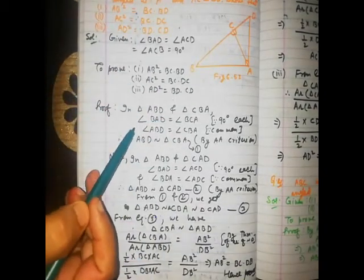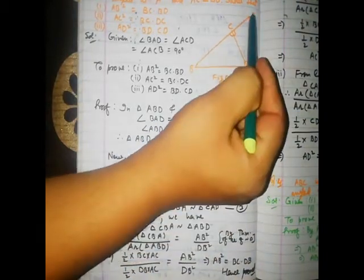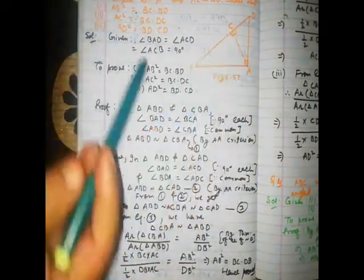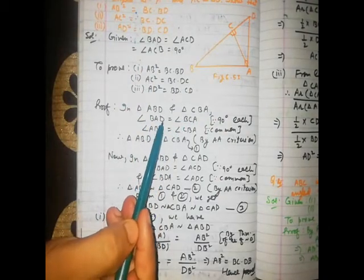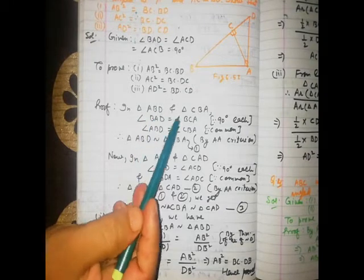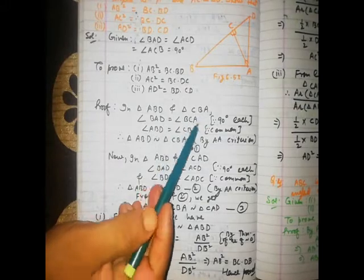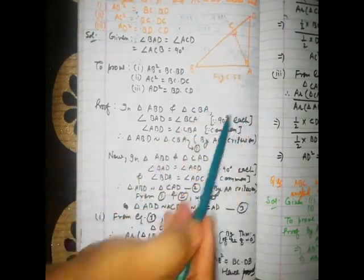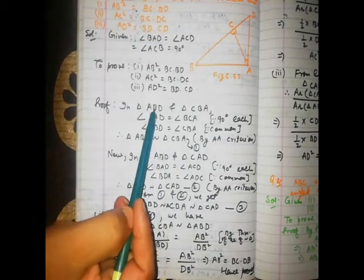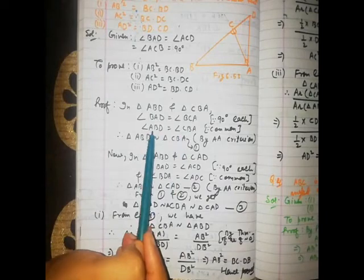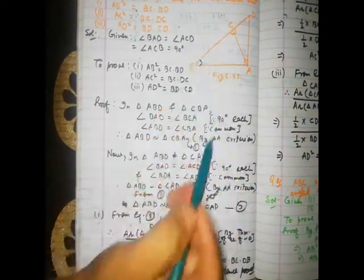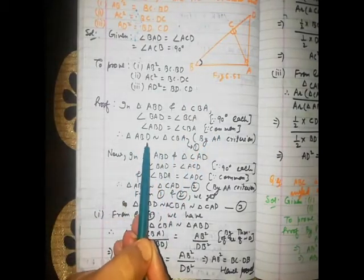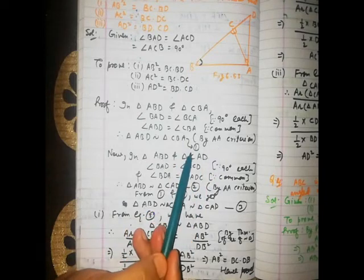To prove these three parts, first we have to consider the whole triangle ABD. Triangle ABD is a right triangle, and the other triangle CBA is also a right triangle. In these triangles, angle BAD and angle BCA are each 90 degrees. Also, angle ABD is common to both triangle ABD and triangle CBA. Therefore, triangle ABD is similar to triangle CBA by the AA criterion. This is equation number 1.